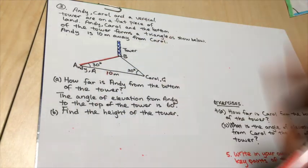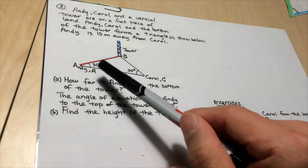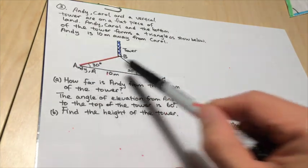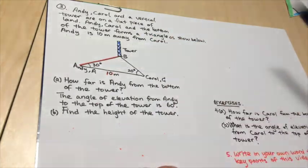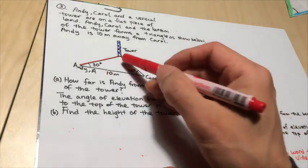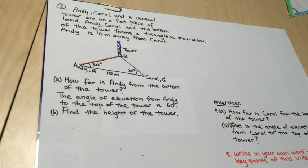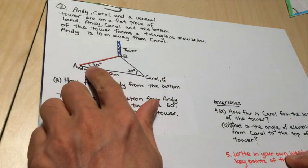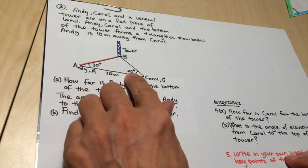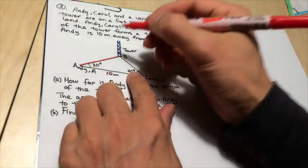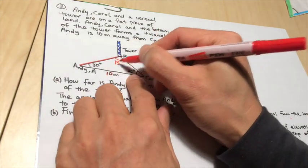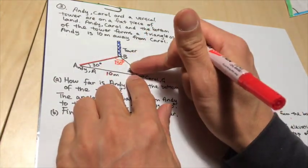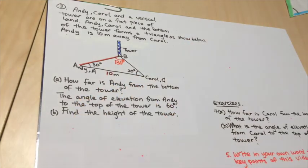Here, part of the diagram is already given to you. And you are told that Andy and Carroll are 10 meters apart. But this angle is not given. But that's easy. Let's fill in that angle. Since a triangle has 180 degrees, so here is 30, here is 20, here is 50 degrees. So this angle here must be 130 degrees. 130 plus 30 plus 20 gives you 180.